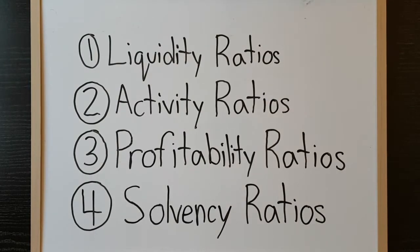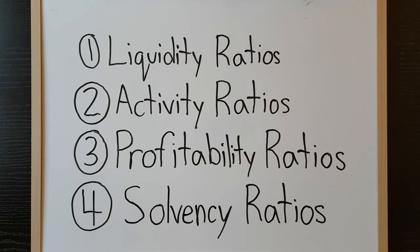The four main categories of ratios are liquidity ratios, activity ratios, profitability ratios, and solvency ratios. Let's take a look at these categories and a couple of the most common ratios in each category.